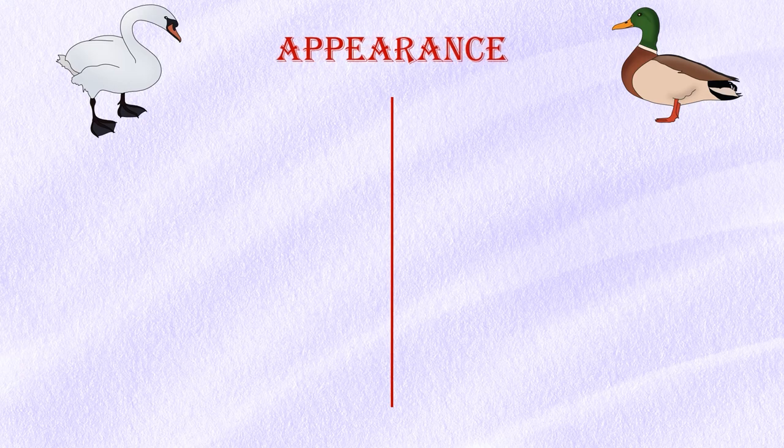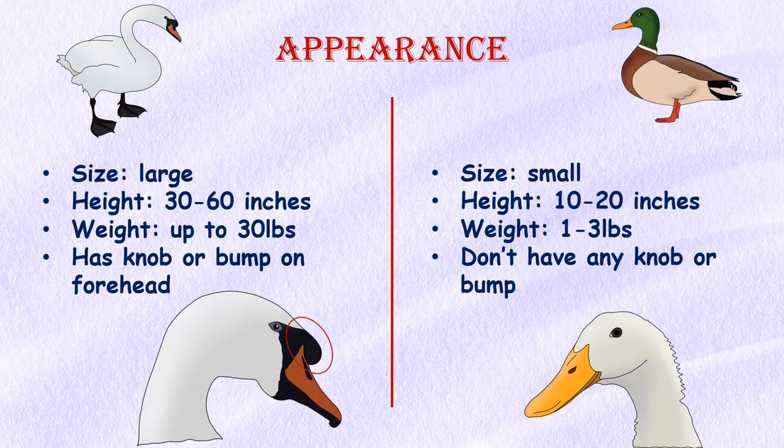Appearance: Swans are considered one of the largest birds in the world with long legs. The average swan reaches anywhere from 30 to 60 inches long, while ducks average 10 to 20 inches in length. Ducks weigh 1 to 3 pounds on average, while swans weigh up to 30 pounds. Swans also have a more prominent knob or bump on their forehead, which is absent in ducks.